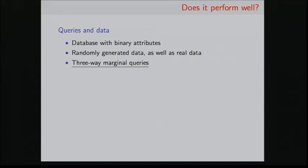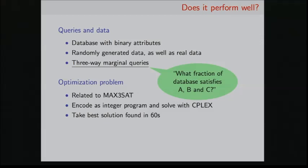So does it perform well? I'm just going to describe some preliminary results. Our database has binary attributes. We've tested this on randomly generated data as well as real data. And the queries that we try to answer are these so-called three-way marginal queries. These are queries of the form what fraction of the database satisfies A, B, and C, where you can think of A, B, and C as three attributes. So the optimization problem for this class of queries is related to max3SAT. It's not exactly the same as max3SAT, but it's a variant. So we solve this by encoding this problem as an integer program and feeding it into CPLEX, which is a very optimized integer program solver. And we take the best solution found in the first 60 seconds, which we've experimentally verified to usually be pretty good. Often we've found that CPLEX finds a very good solution very quickly, but it takes a very long time to prove that it is really the best solution. But heuristically, it seems to work pretty well. And the hardware is nothing too special. This is just like a medium-performance desktop computer. So in principle, you could run this on your laptop and it should get similar numbers.